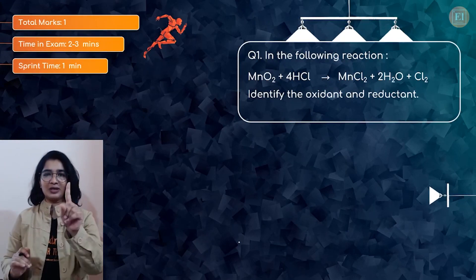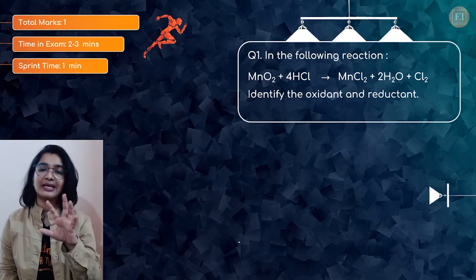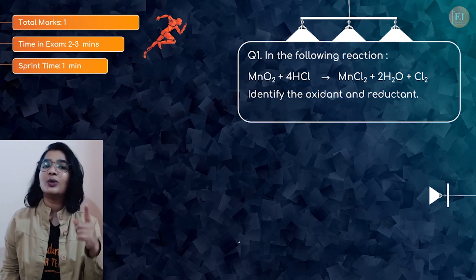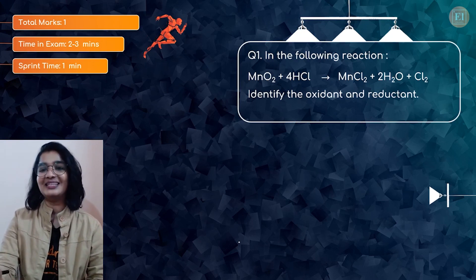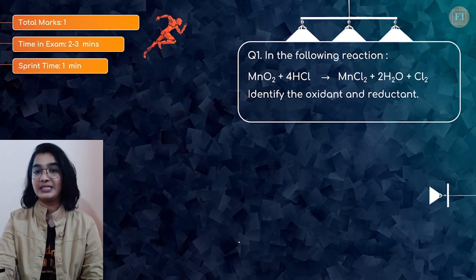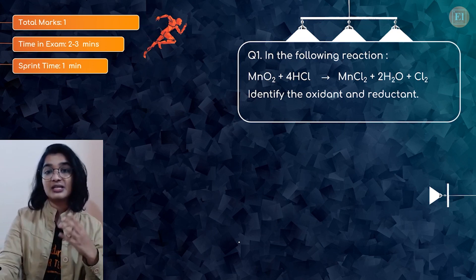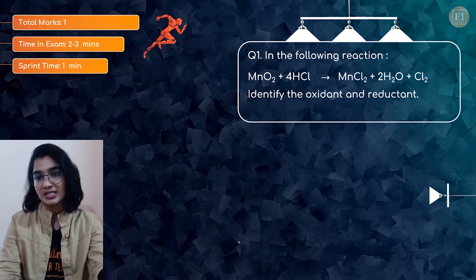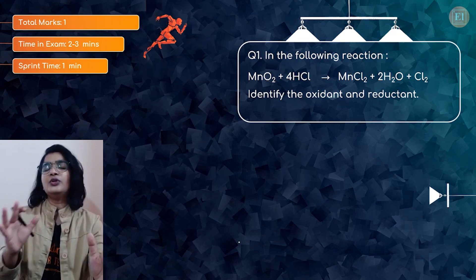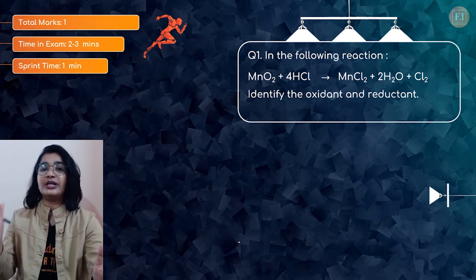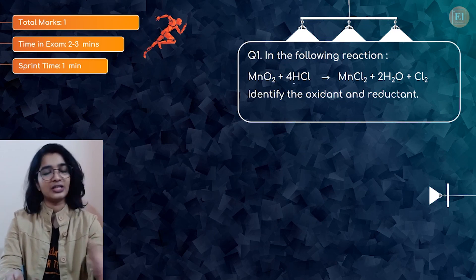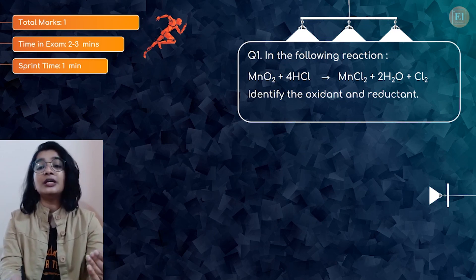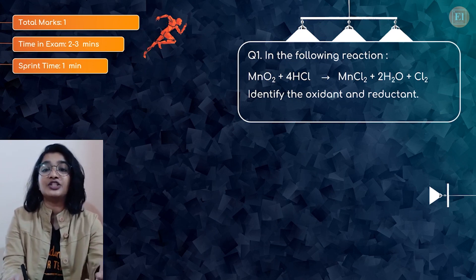So this is the first question — one mark. In an exam you will get two to three minutes, but let's try to solve it within a minute. The question: In the following reaction, MnO2 + 4HCl → MnCl2 + 2H2O + Cl2, identify the oxidant and the reductant. So oxidant means oxidizing agent, and reductant means reducing agent. Whenever you look at the reaction — this is a redox reaction, that's for sure — but which is undergoing reduction and which is undergoing oxidation is something you have to determine.